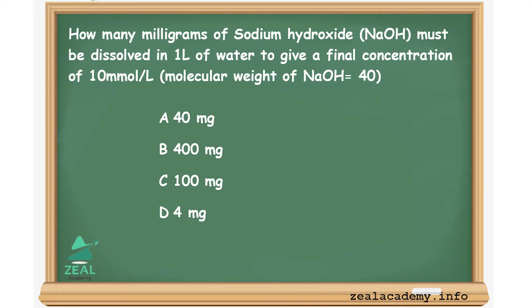How many milligrams of sodium hydroxide must be dissolved in one liter of water to give a final concentration of 10 millimole per liter? Molecular weight of sodium hydroxide is equal to 40. Option A: 40 milligram, Option B: 400 milligram.